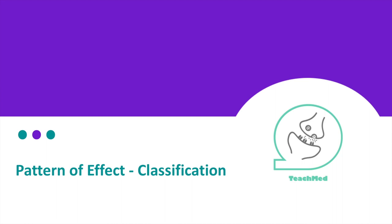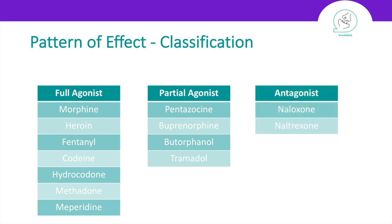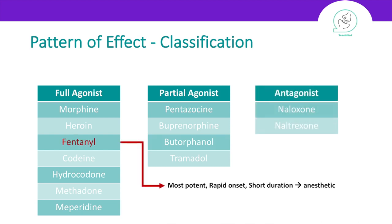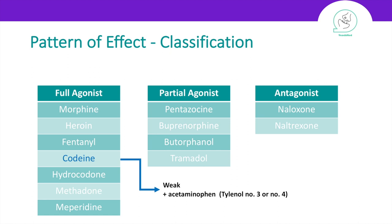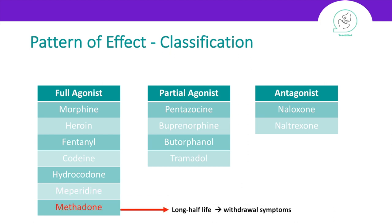Next is the pattern of effect and classification. Opioids can be full agonists, partial agonists, or antagonists. Among the full agonists, fentanyl is the most potent with rapid onset and short duration, making it a good option for use as an anesthetic. Codeine is the weakest and is combined with acetaminophen in a combination called Tylenol No. 3 or No. 4 for mild pain. All opioids can cross the placenta and reduce uterine muscle contraction; however, meperidine does this the least, making it a good option during labor. Lastly, methadone has a long half-life, making it a good option for managing withdrawal symptoms in opioid-dependent patients.